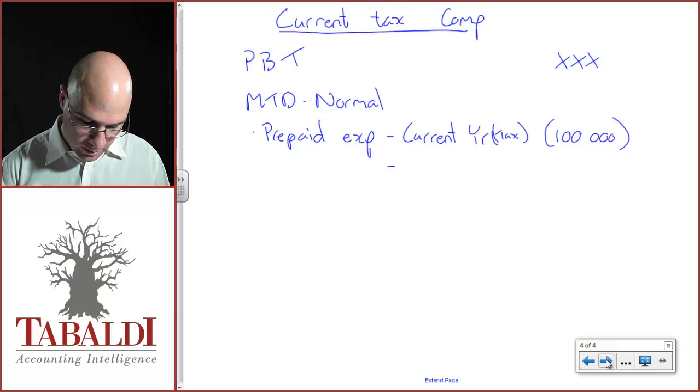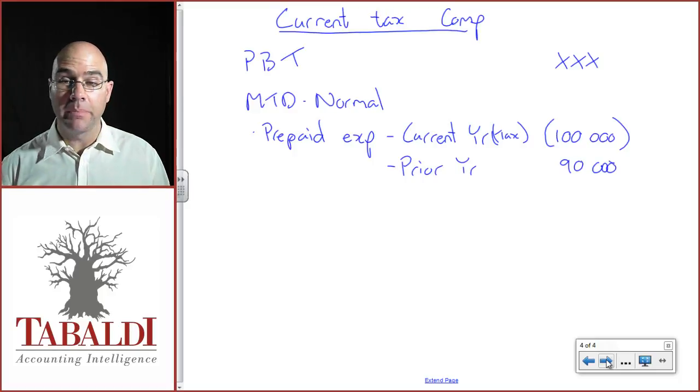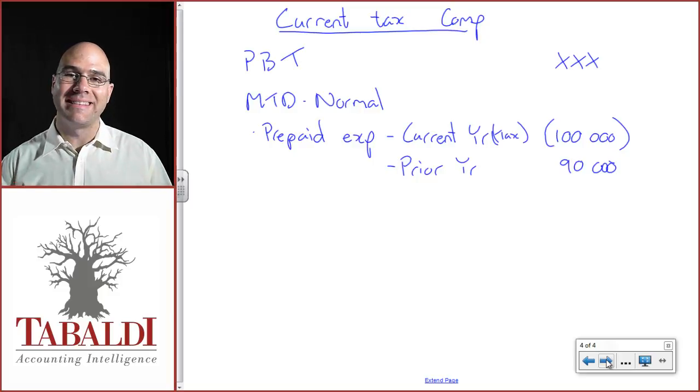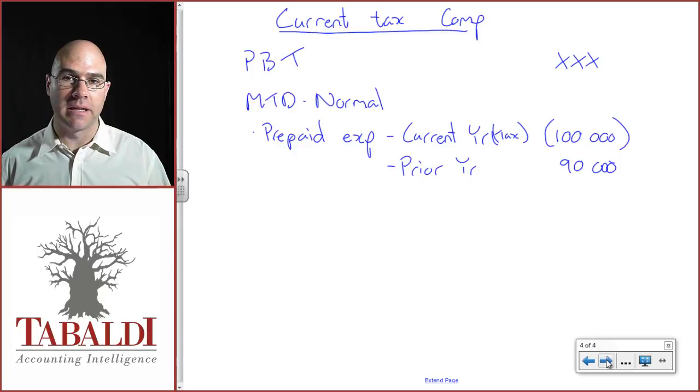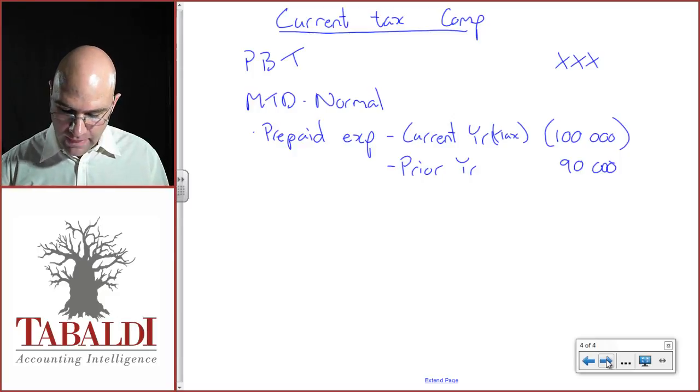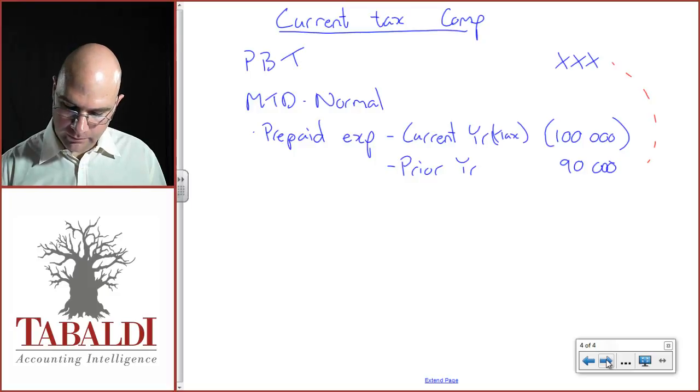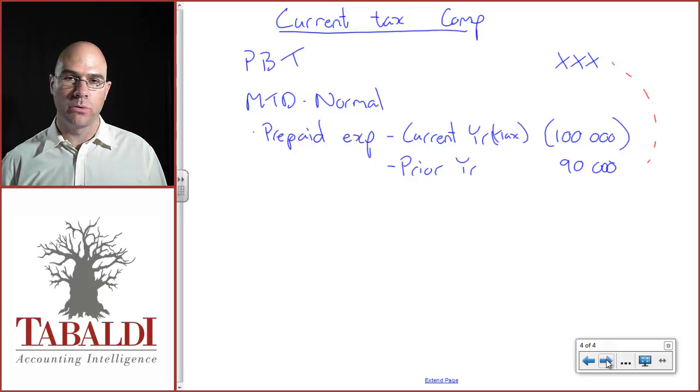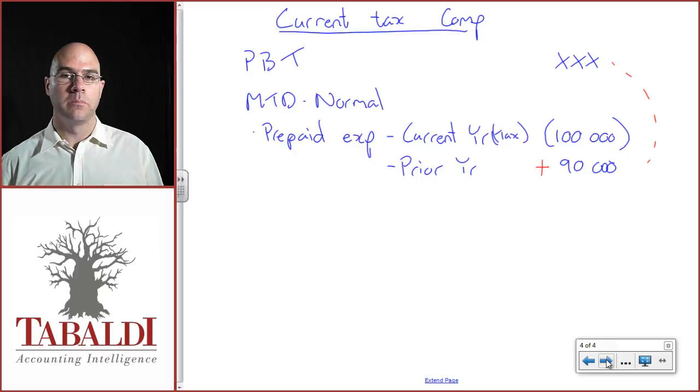But for accounting, what happened? In the current year, I took last year's figure of 90,000 out of prepaid expense and went debit expense profit and loss, credit prepaid expense financial position. So that 90,000 was an expense in my profit before tax. I need to reverse it out and add that back.